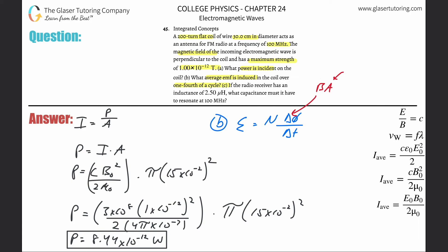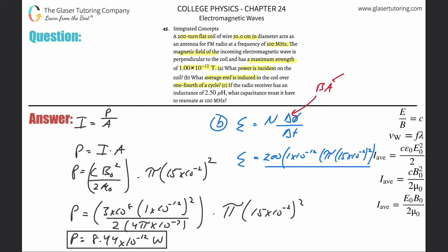We know the magnetic field, and we know the area. The area is changing — it goes through one-fourth of a cycle, starting at full area and going to zero. So the induced EMF is: the number of turns, 200, multiplied by the magnetic field, 1×10⁻¹², multiplied by the area — which is π times (15×10⁻²)² — all divided by the change in time.